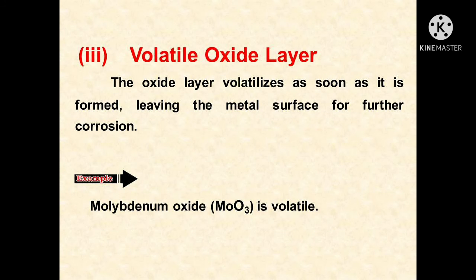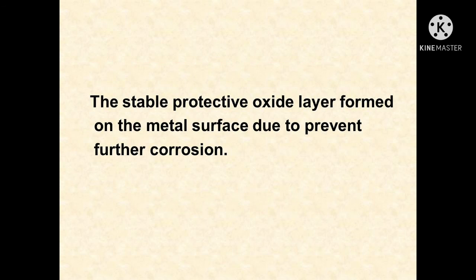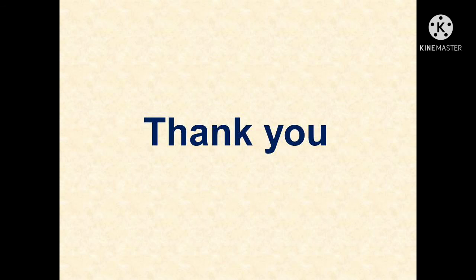Volatile oxide layer: the oxide layer volatilizes as soon as it is formed, leaving the metal surface exposed for further corrosion. An example is molybdenum oxide, which is volatile. The stable protective oxide layer formed on the metal surface helps to prevent further corrosion. Thank you.